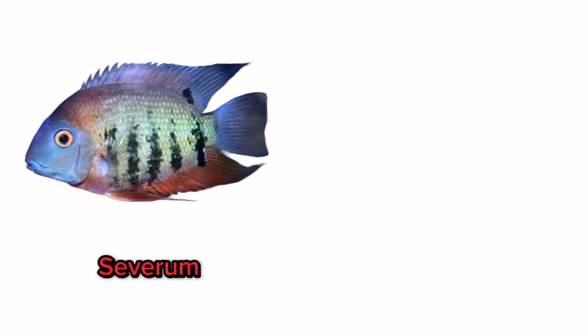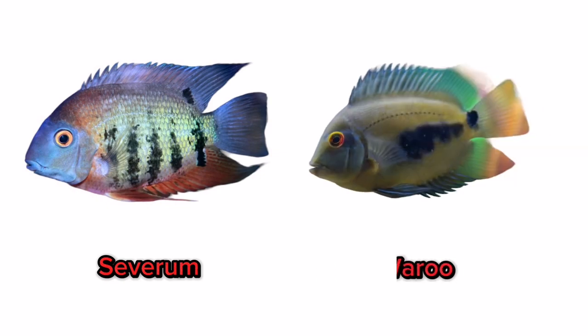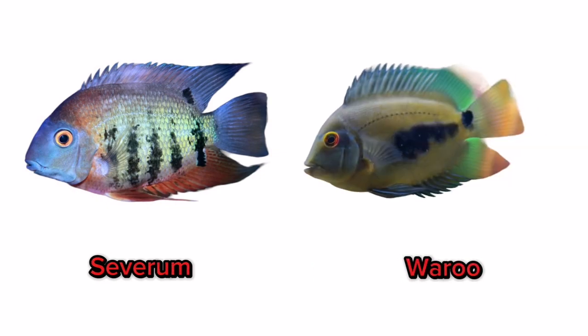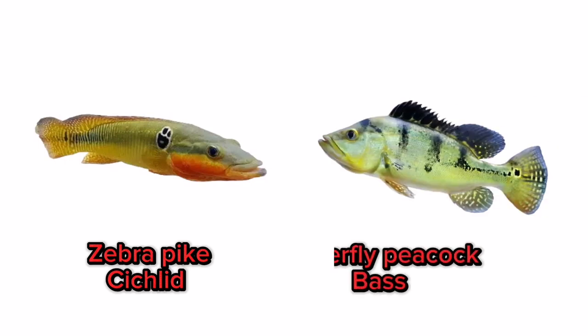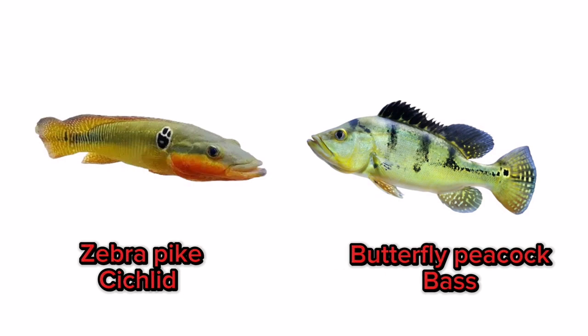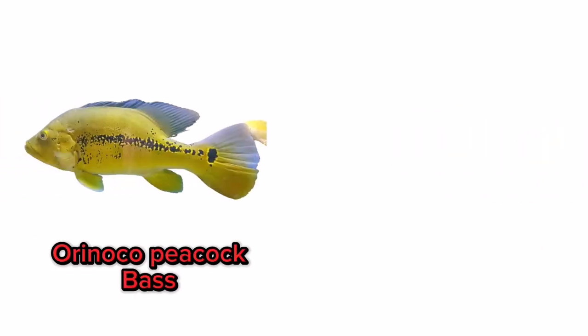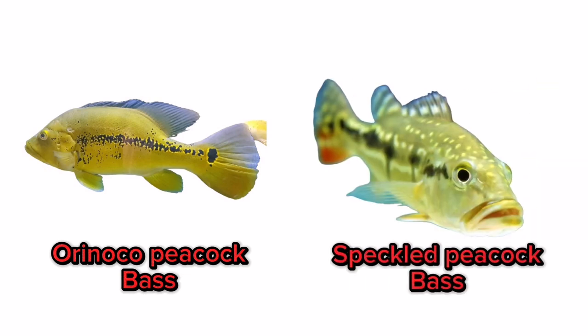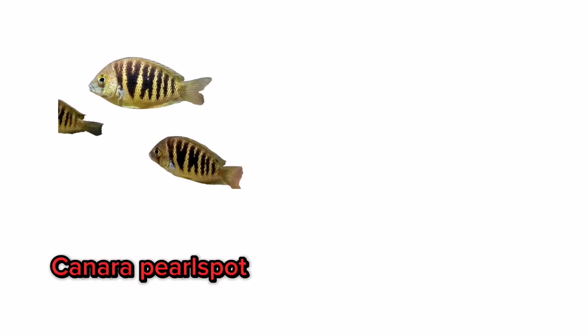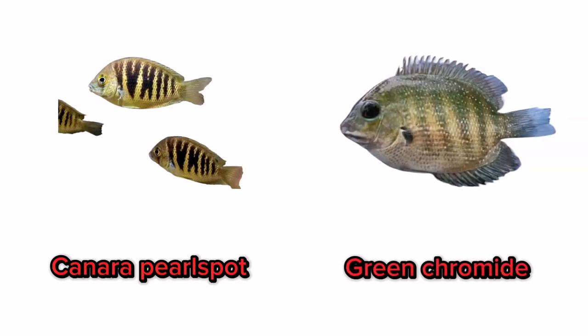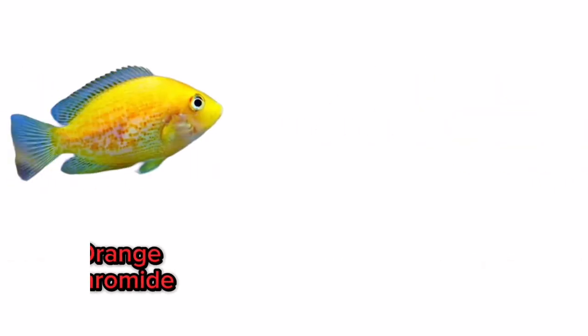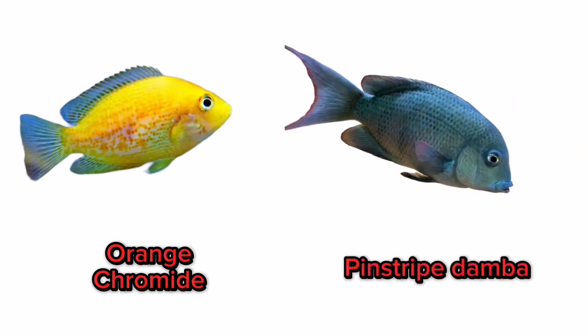Severum. Uaru. Zebra Pike Cichlid. Butterfly Peacock Bass. Orinoco Peacock Bass. Speckled Peacock Bass. Canara Pearlspot. Green Chromide. Orange Chromide. Pinstriped Amber. Blood Parrot Cichlid.